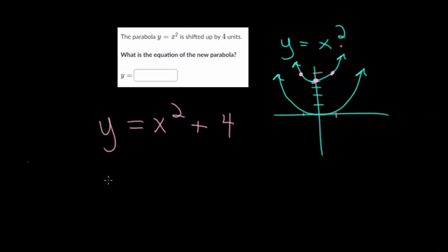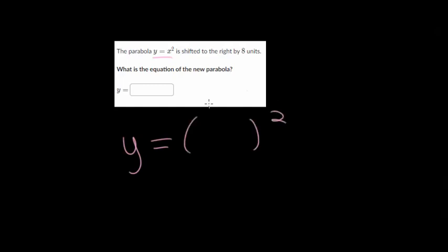You can verify this — it shifted the entire parent function up four units. You can always check these with a graphing calculator or the free graphing calculator at Desmos. The new equation of this parabola is y equals x squared plus four. Now for the next one, we're starting again with our parent function and shifting to the right by eight units. When shifting left or right, we're going to be adding or subtracting on the inside, so we'd have y equals something squared where x is added or subtracted.